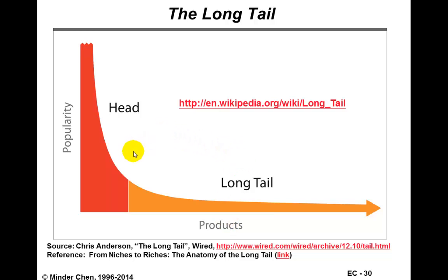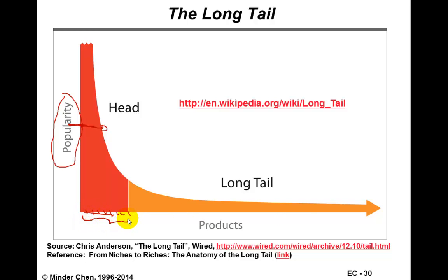Let's use this simple diagram to explain what we mean by long tail. Consider this chart with a curve indicating the number of units sold — the y-axis represents popularity, and the x horizontal axis indicates various books. The head of this curve indicates popular items, and the long tail indicates products which are much less popular.